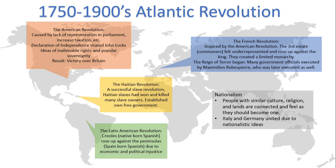The French Revolution was inspired by the American Revolution. The Third Estate — commoners — shared one-third of the vote, while the clergy and the nobility shared the other two-thirds. They felt underrepresented, especially because they represented 98% of the population. They split off from the other estates and rose up against their king. They were successful in creating a limited monarchy; however, right after, the Reign of Terror began, in which many officials were executed by Maximilien Robespierre, who was later executed as well for his harshness.